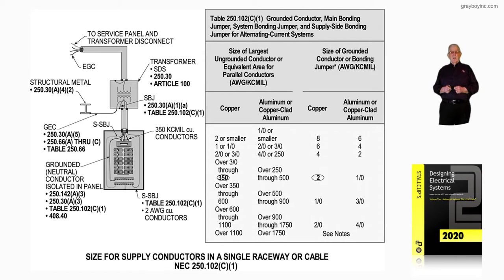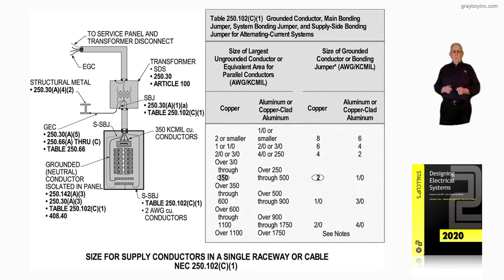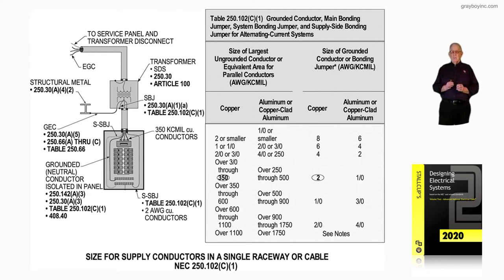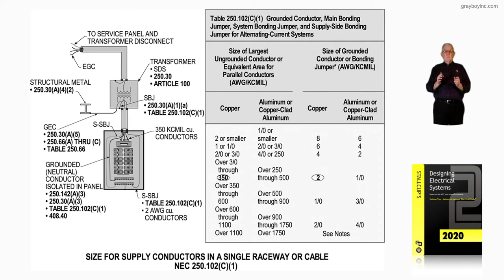This illustration deals with sizing supply-side conductors in a single raceway or cable in accordance with 250.102C1. Before we get into the illustration, notice this table is highlighted — Table 250.102C1. If we review the very top portion of the table, it talks about the grounded conductor, main bonding jumper, system bonding jumper, and supply-side bonding jumper for AC current systems. This information tells you exactly how to use this table to size those items.